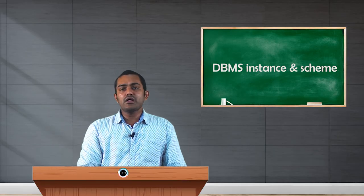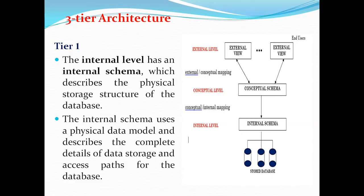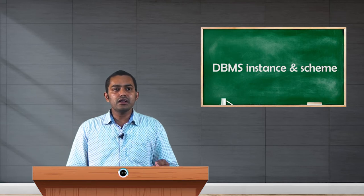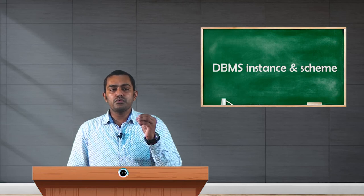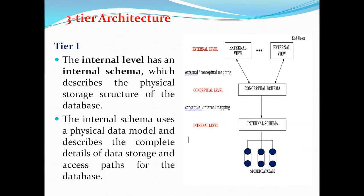After discussing Tier 1 and Tier 2, in Tier 3 architecture all three tasks are kept in different layers — different systems or different locations. Tier 1 here refers to the internal level, also called the internal schema. As the name suggests, the internal schema defines the physical structure of the database — it describes the physical storage structure, including the size of fields and the total amount of data stored in GB.